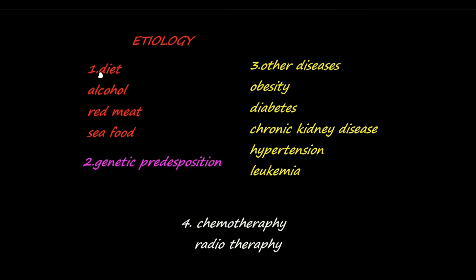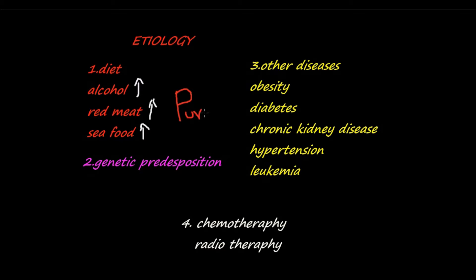Now let's talk about etiology. According to dietary causes, increased consumption of alcohol, red meat, and seafood all complicate gout because all of these increase purine levels, which break down into uric acid.